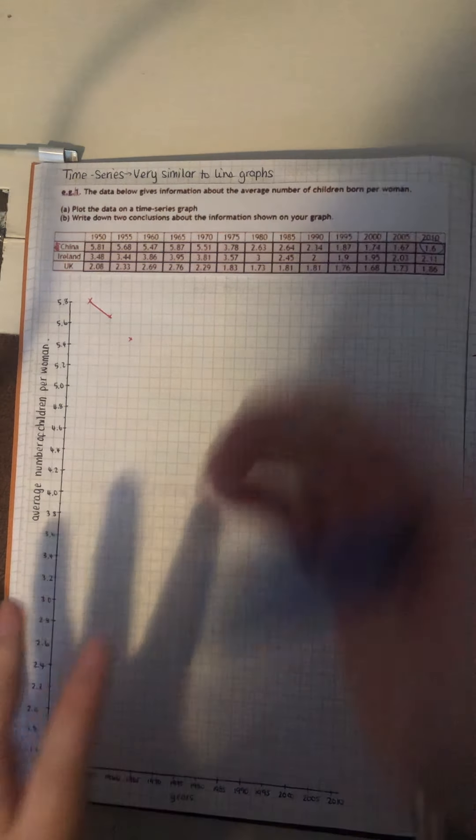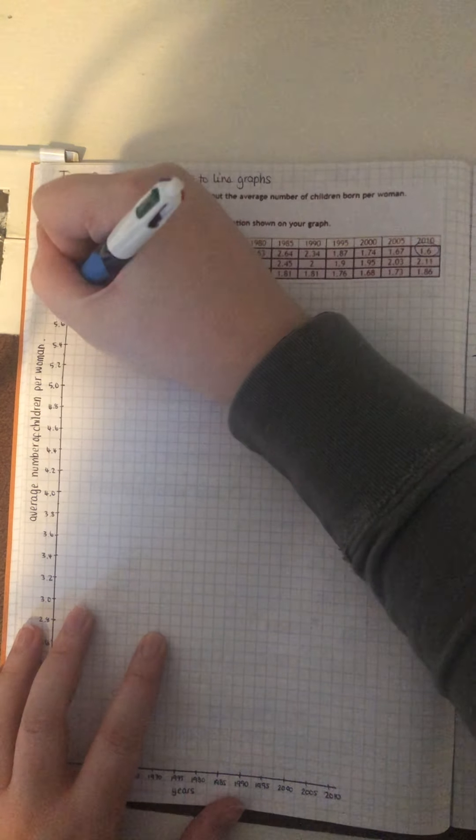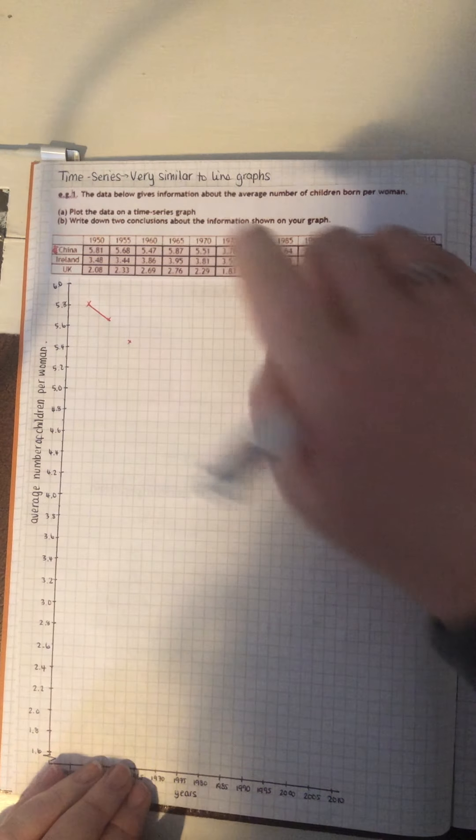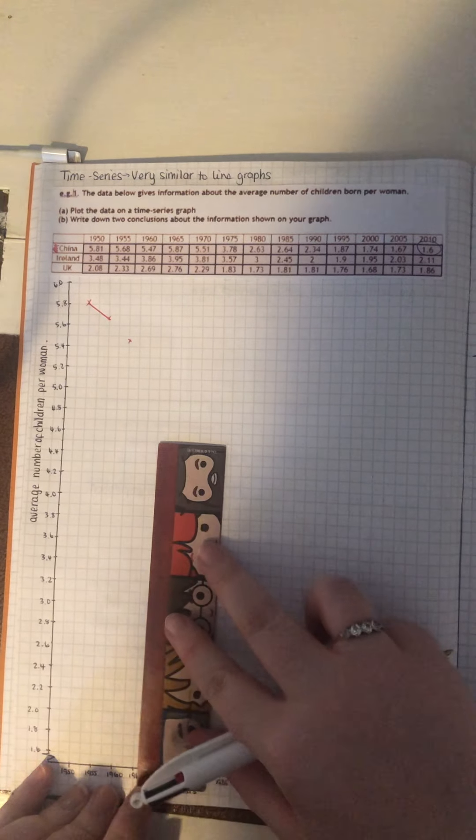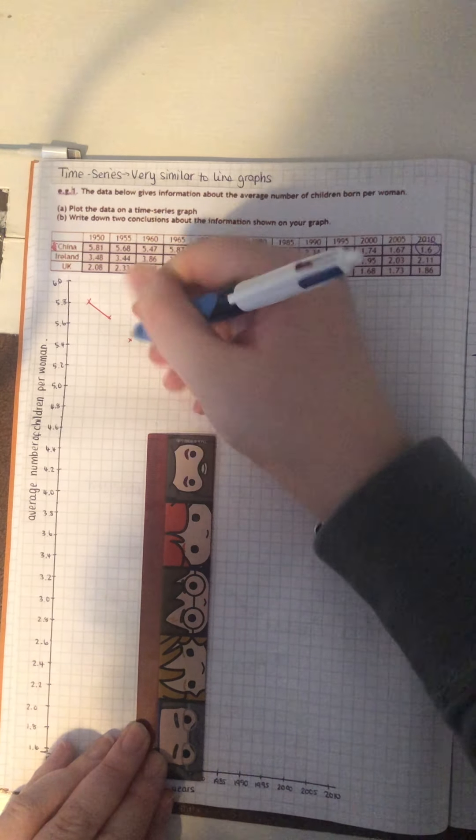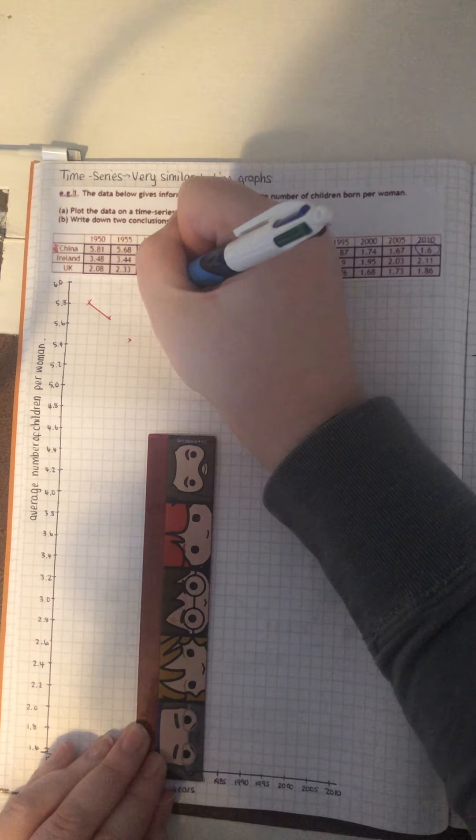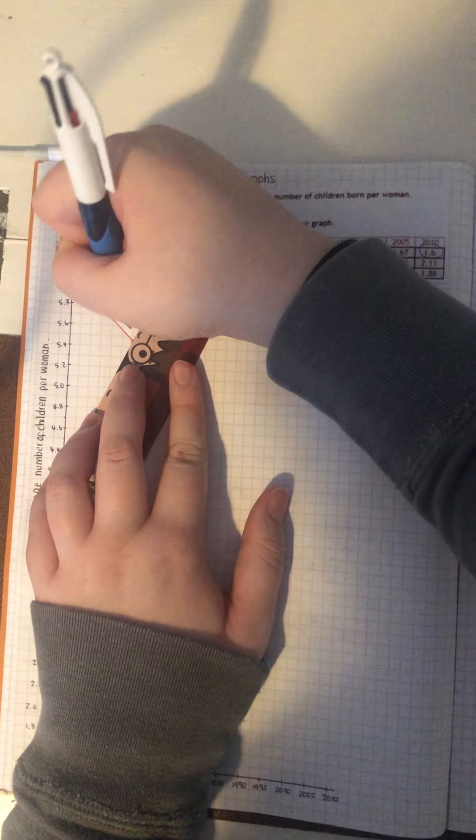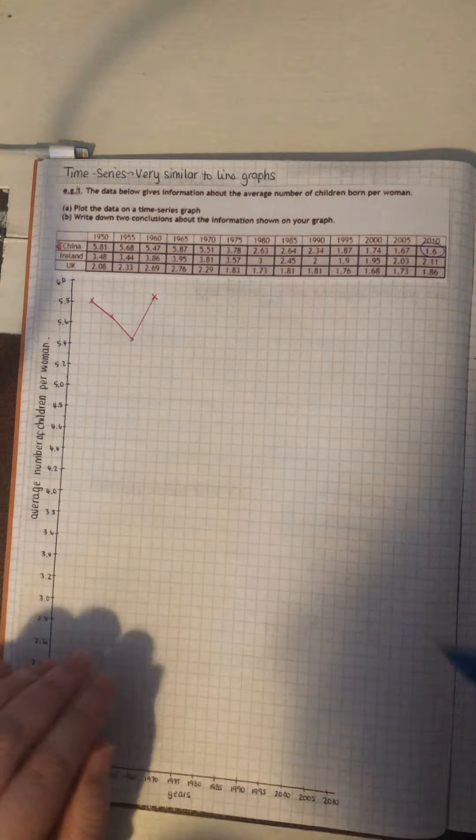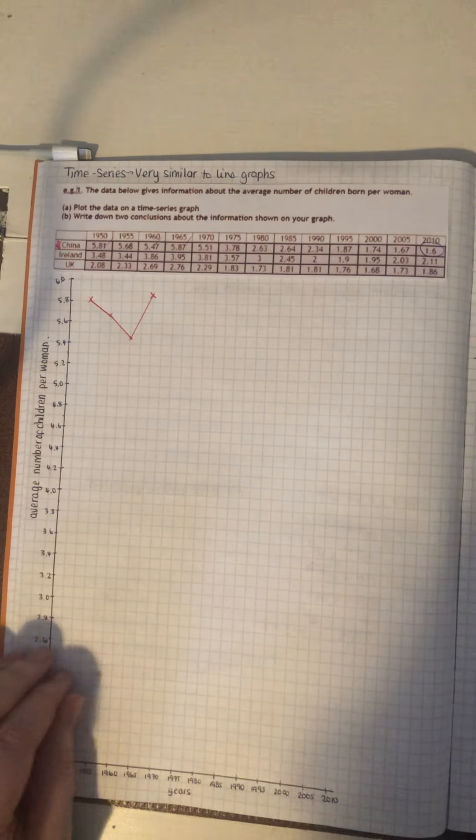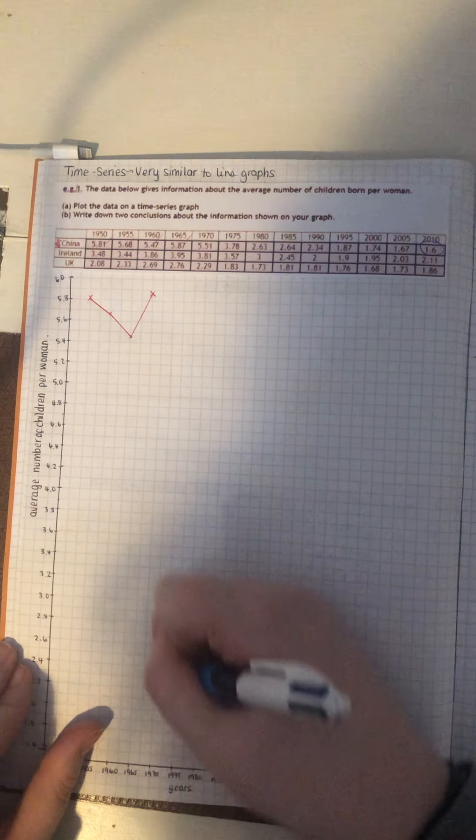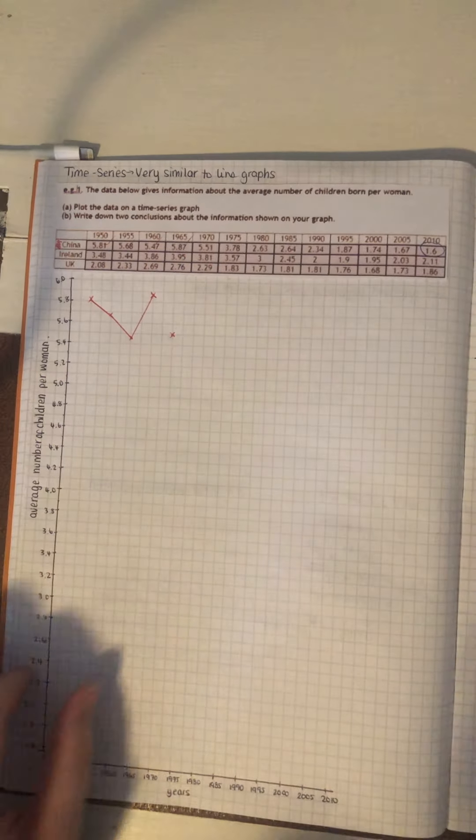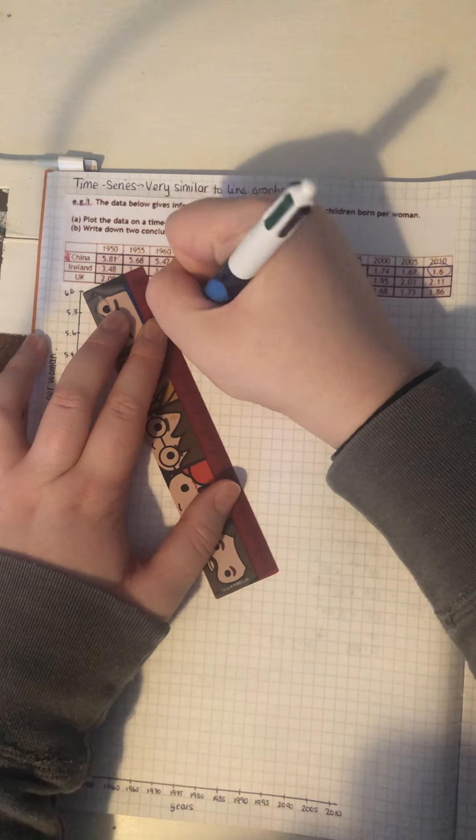1960 is 5.47. So, 4, that would be 5, roughly there. I think I'm just going to connect them after. Oh, I need to go up just a tiny bit more, because I've just noticed there is actually a higher one. 6.0. So, the next one is 5.87. 6.5, 5.87. So, it's going to be roughly there. Next one. So, I've done the first four. 5.5. That's 1970, isn't it? 1970. 5.51. It's going to be just above there.